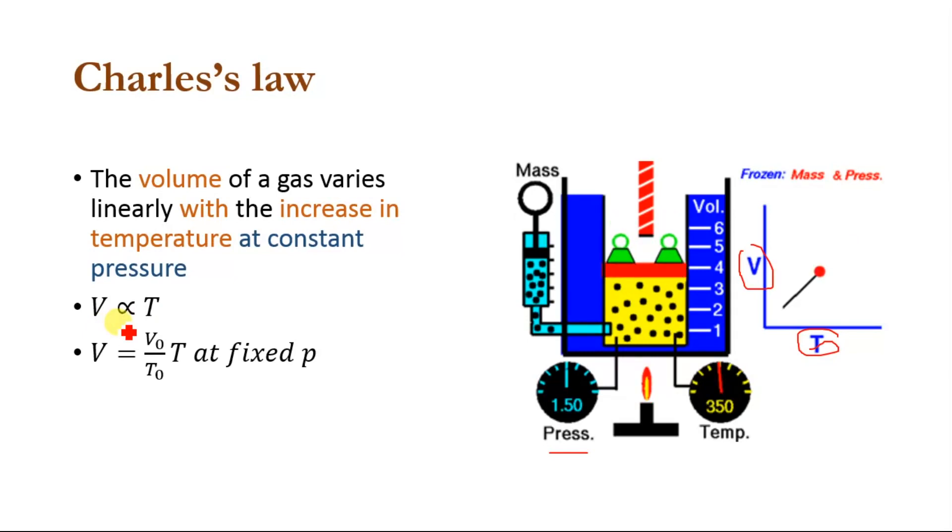It can be written as V directly proportional to T, or V equals V₀ divided by T₀ times T at fixed pressure.